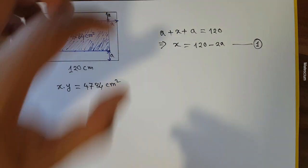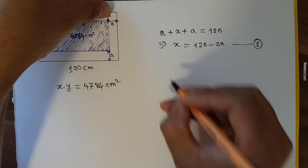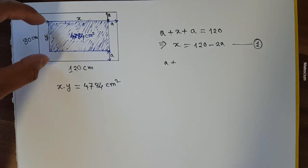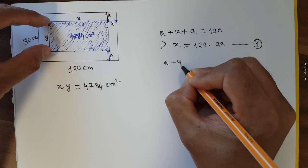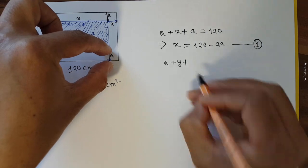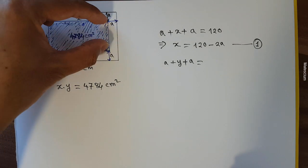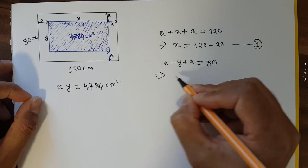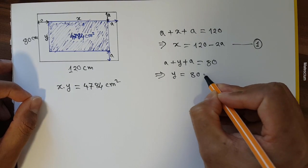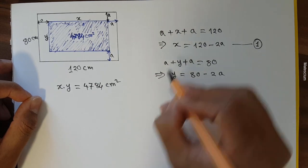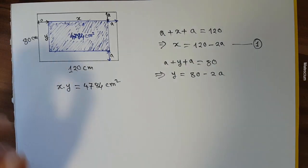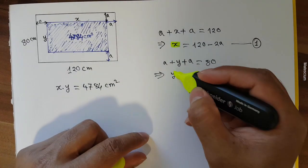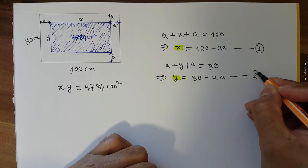Similarly, for the width: a plus y plus a equals 80 centimeters. So y equals 80 minus 2a. This is equation number two.